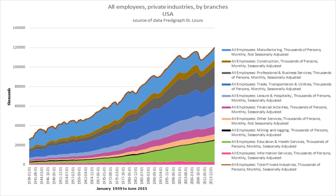Sweden. According to Swedish law, there are three types of employment. Test employment, where the employer hires a person for a test period of six months maximum. The employment can be ended at any time without giving any reason. This type of employment can be offered only once per employer and employee combination. Usually a time-limited or normal employment is offered after a test employment.